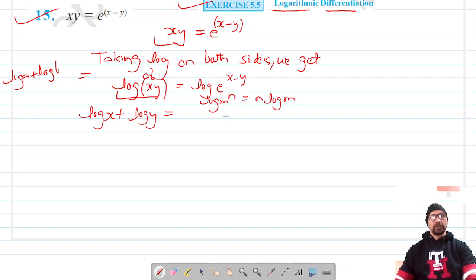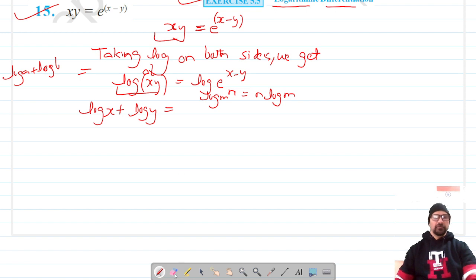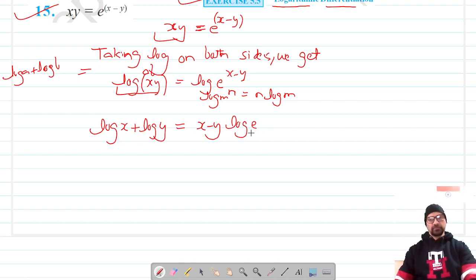We can write it as: log x + log y = (x - y) log e. Now the log we are working with here is to the base e.